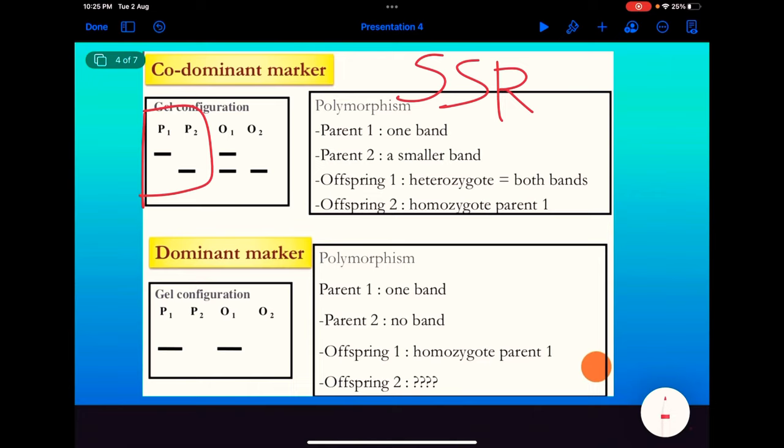Now co-dominant markers are markers for which both alleles are expressed when co-occurring in an individual. Therefore, with co-dominant markers, heterozygotes can be distinguished from homozygotes, allowing the determination of the genotypes. Here in offspring one, you can see both the bands, that is of parent one and parent two, are present. And in offspring two, only a single band is present of parent two. In offspring one, because both bands are there, it shows that offspring one is heterozygote and offspring two is homozygote. So it can distinguish between genotypes.